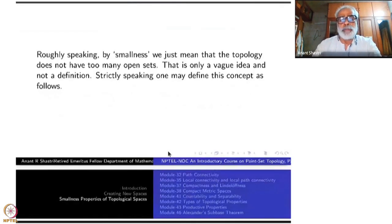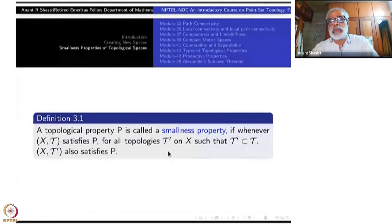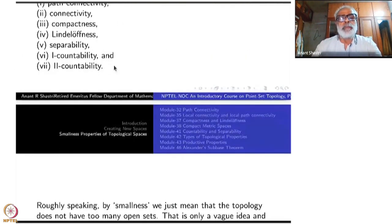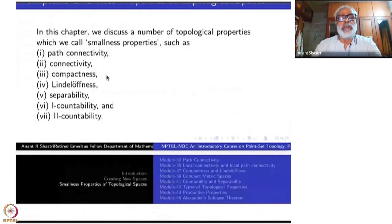You can call a topological property a smallness property if whenever X tau satisfies P, for all topologies tau prime on X such that tau prime is contained in tau, X tau prime also satisfies P. So in that sense with respect to this P, tau is quite small. Many of these properties here do fit into this definition.